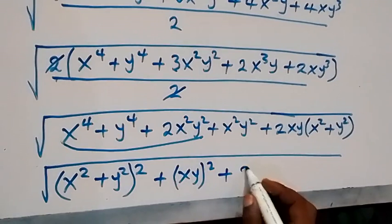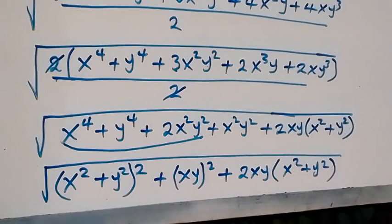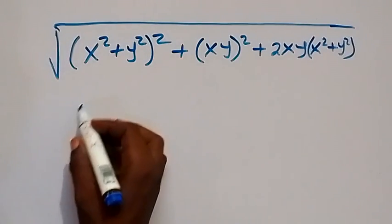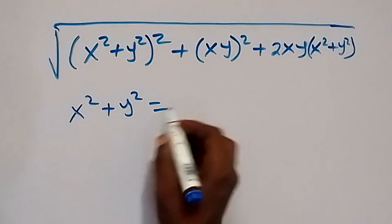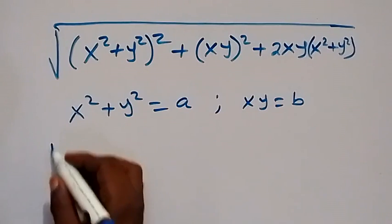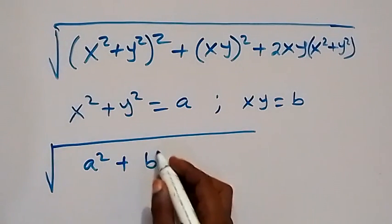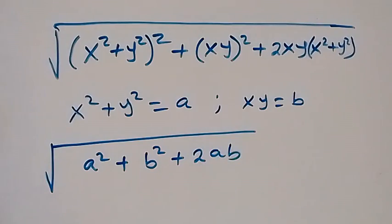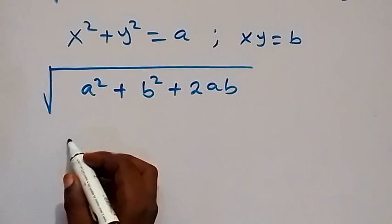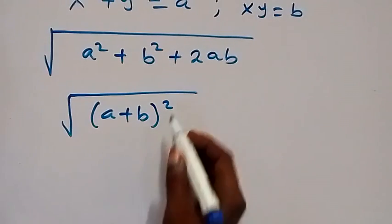From here we make another substitution: let a equal x² plus y², and let b equal xy. Then we can write the expression as: square root of a squared plus b squared plus 2ab, which simplifies as square root of (a plus b) squared. The square root and the square cancel.